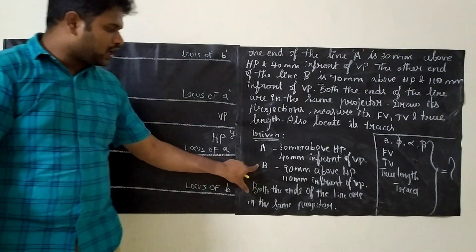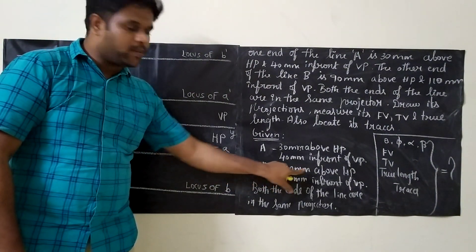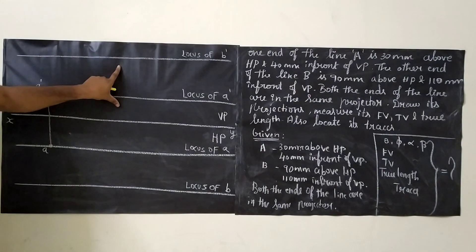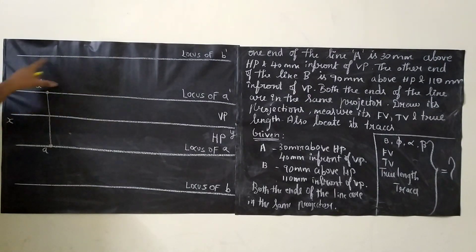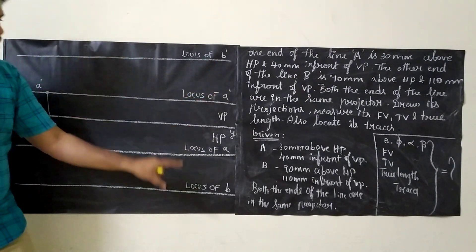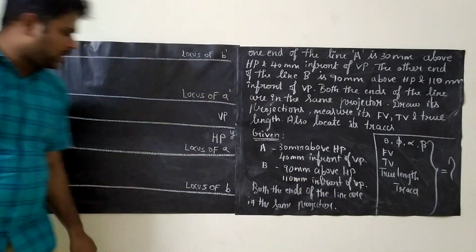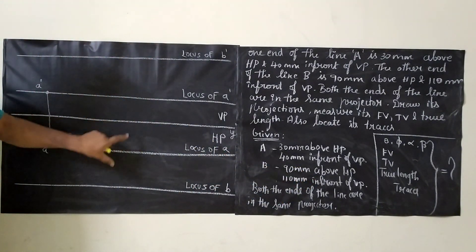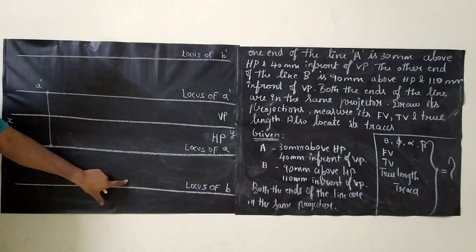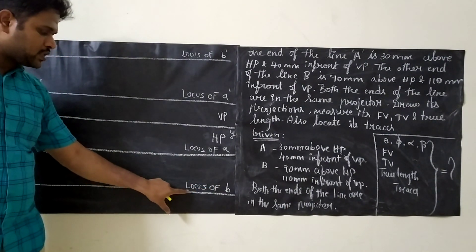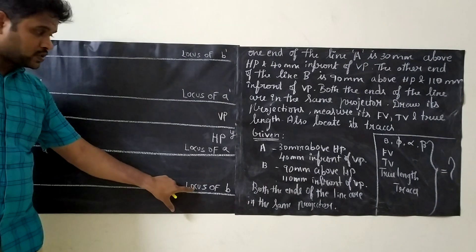Next is point B. Point B is 90 mm above HP, so from the reference line take 90 mm and draw a line — this is called the locus of B'. And 110 mm in front of VP, so from the reference line take 110 mm downward and draw a straight line — this is called the locus of B.